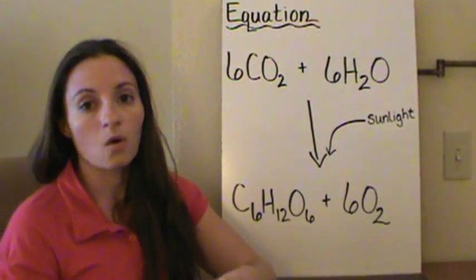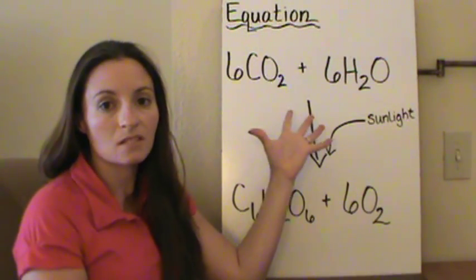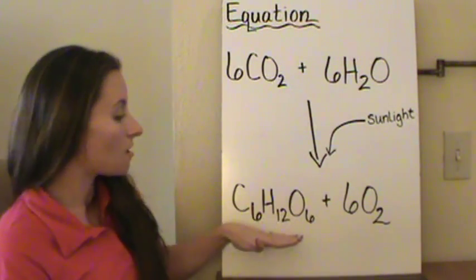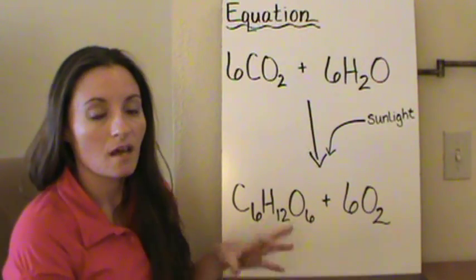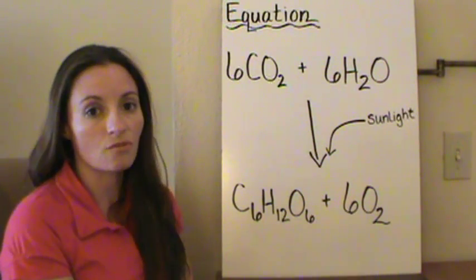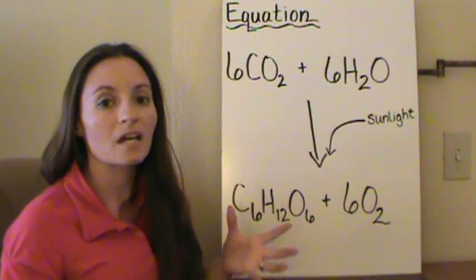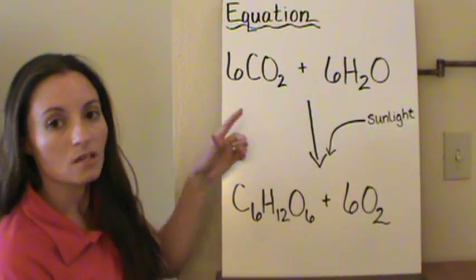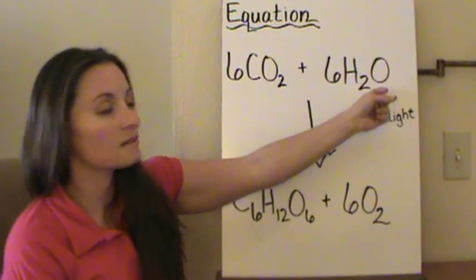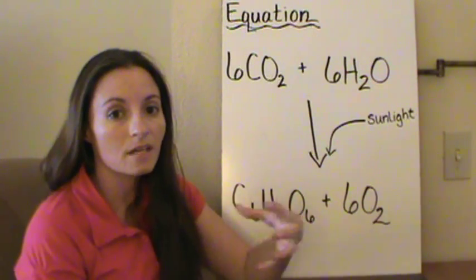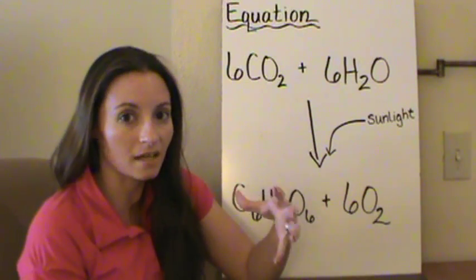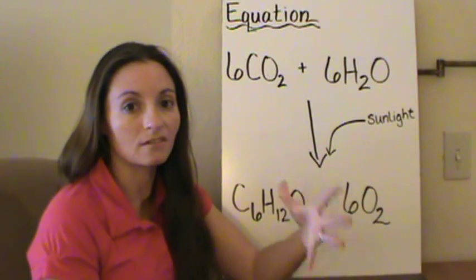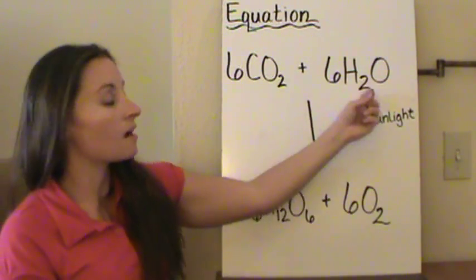Let's take a look at the equation of photosynthesis. This is a balanced equation, meaning that all of the atoms used at the beginning of the equation are rearranged and used at the end. Equations have to be balanced — you can't create or destroy atoms. So we start with 6 CO2 — we need carbon dioxide — and 6 H2O. Plants need water. Think about what happens if they don't have carbon dioxide or water: they are going to wilt and will not be able to survive.